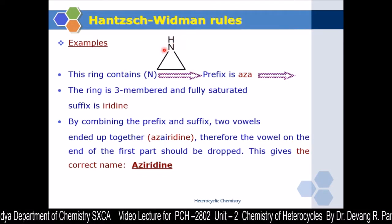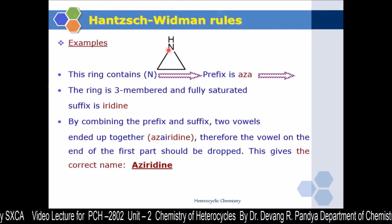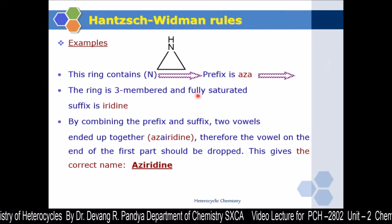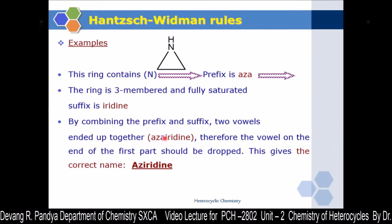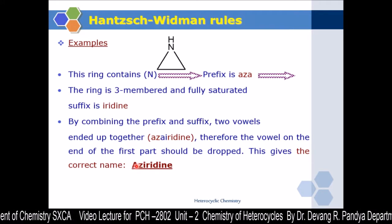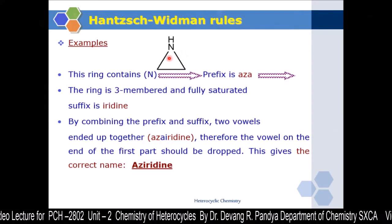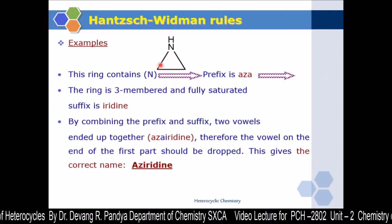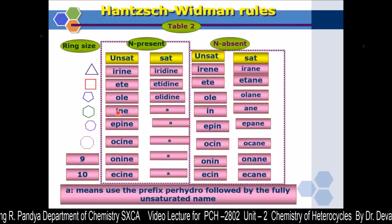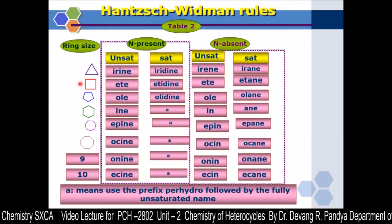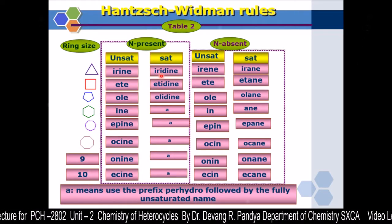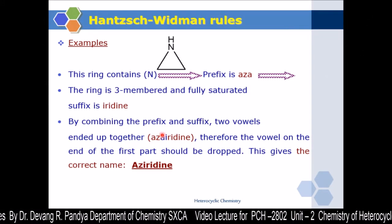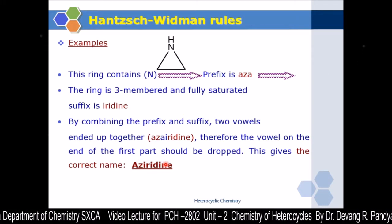An example of Hantzsch-Widman nomenclature: a three-membered saturated ring with nitrogen uses prefix aza and suffix iridine. When combined, aza + iridine has two vowels together — the first vowel A is dropped — giving aziridine. This is the Hantzsch-Widman name for the three-membered saturated nitrogen heterocycle.